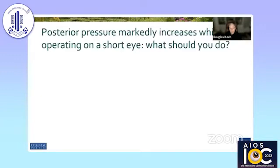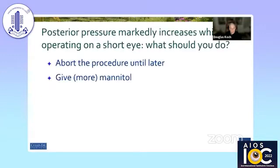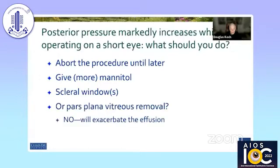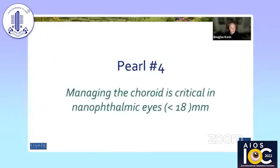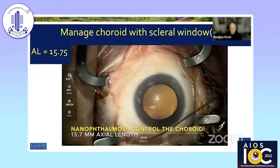If posterior pressure increases during surgery, you should consider aborting the procedure, or try more mannitol. Scleral windows are very successful in our hands. Pars plana vitreous removal is not a good idea because if there is an effusion, it could actually make things worse. Managing the choroid is critical in these eyes — if you manage the choroid, the IOL will sit where predicted because the posterior pressure won't push it forward. The way to do that is to make a scleral window.